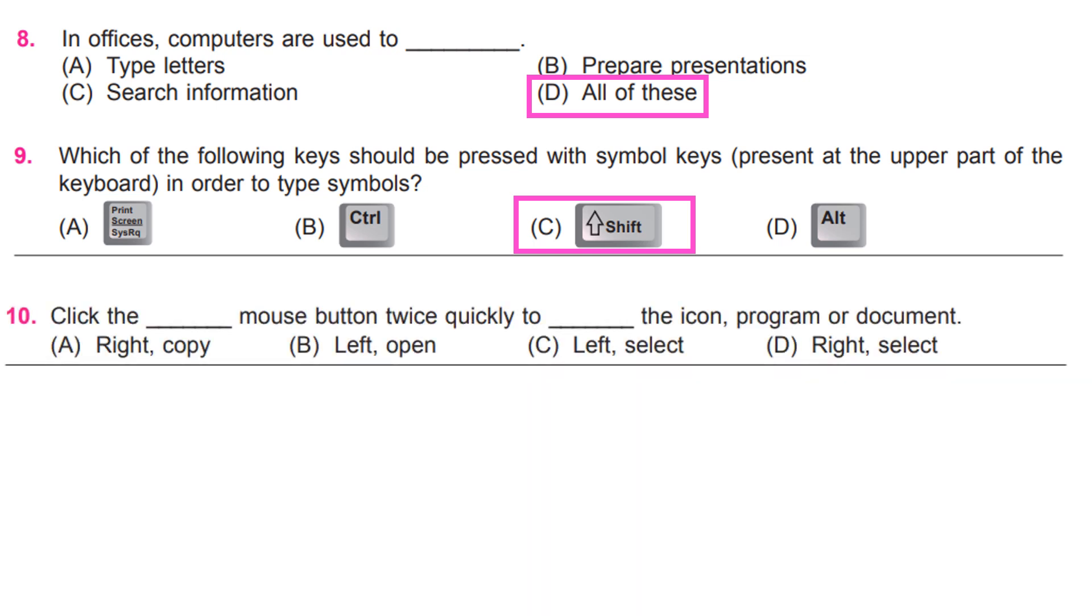Click the dash mouse button twice quickly to dash the icon, program or document. B. Left, open.